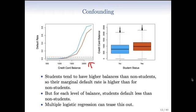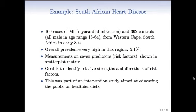We can tease this out by multiple logistic regression, which takes these correlations into account. Let's move on to another example with more variables. We talked about this example in the introduction: the South African Heart Disease dataset. South Africans apparently eat a lot of meat.